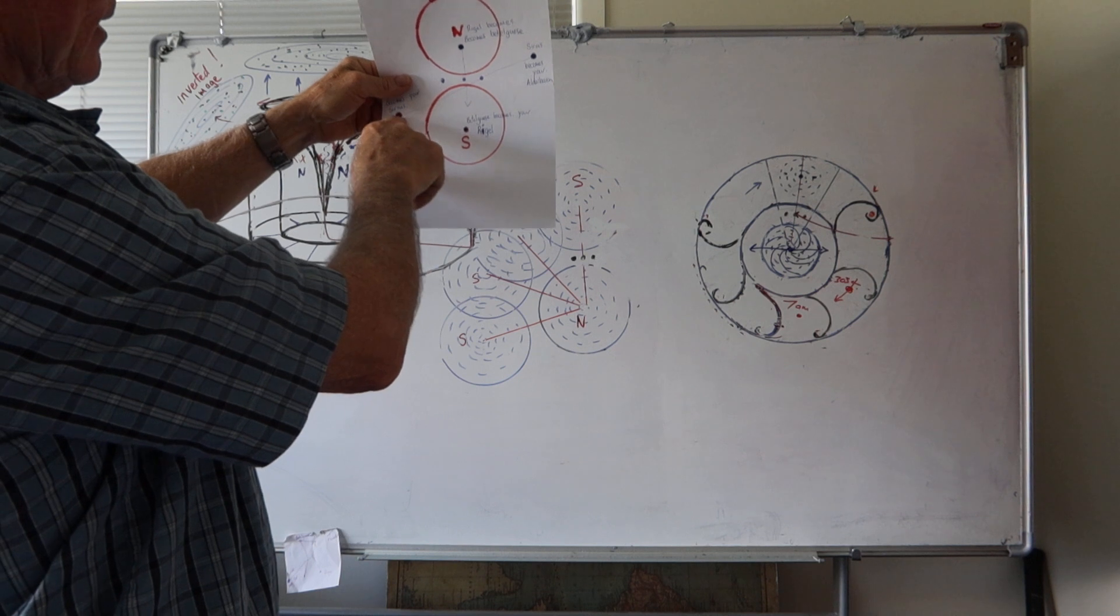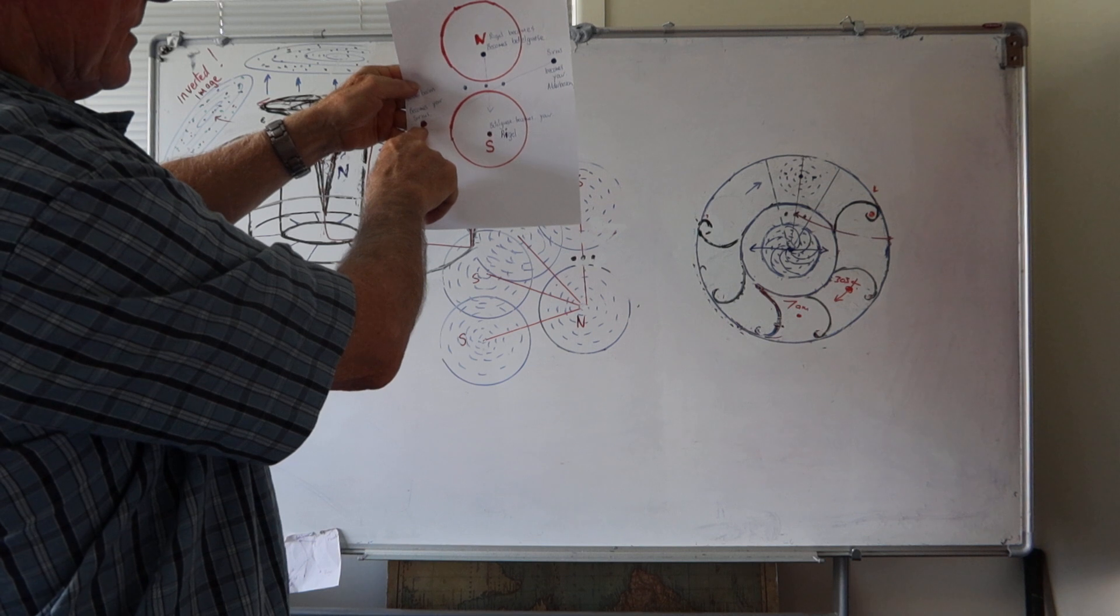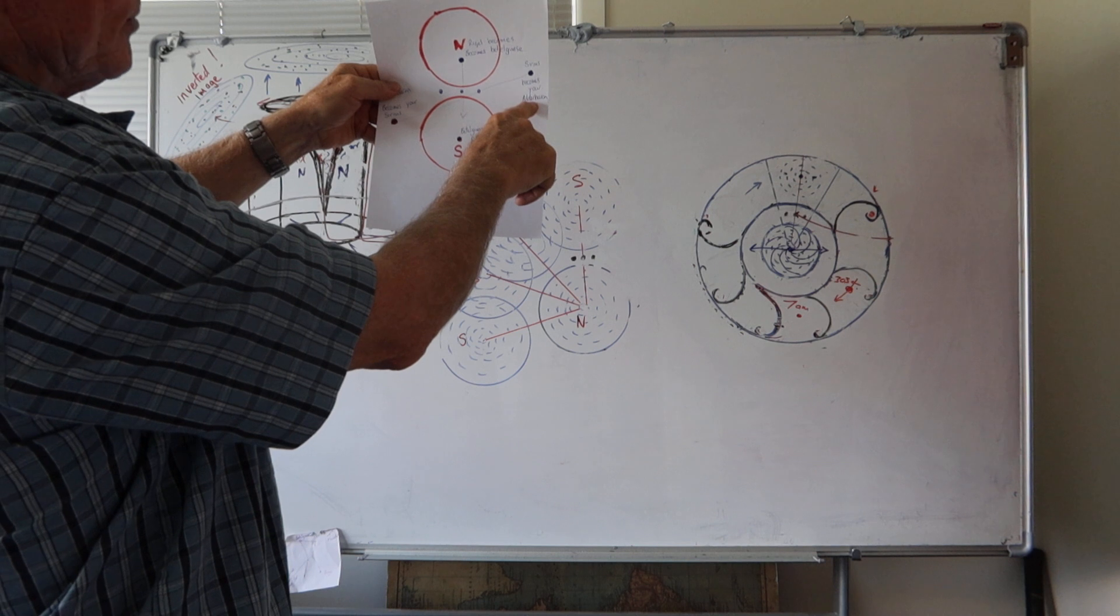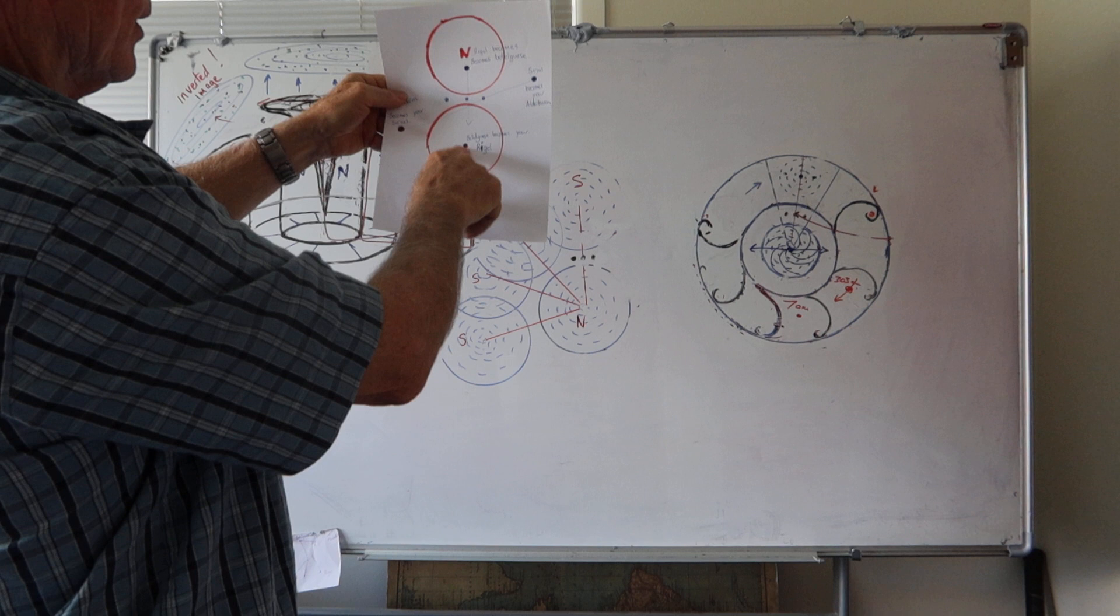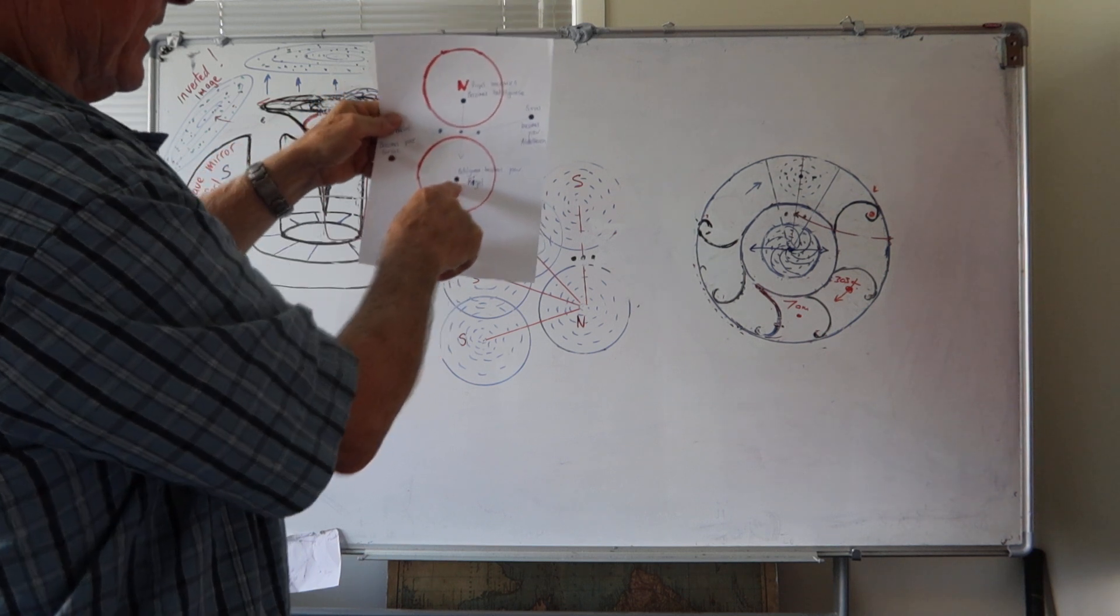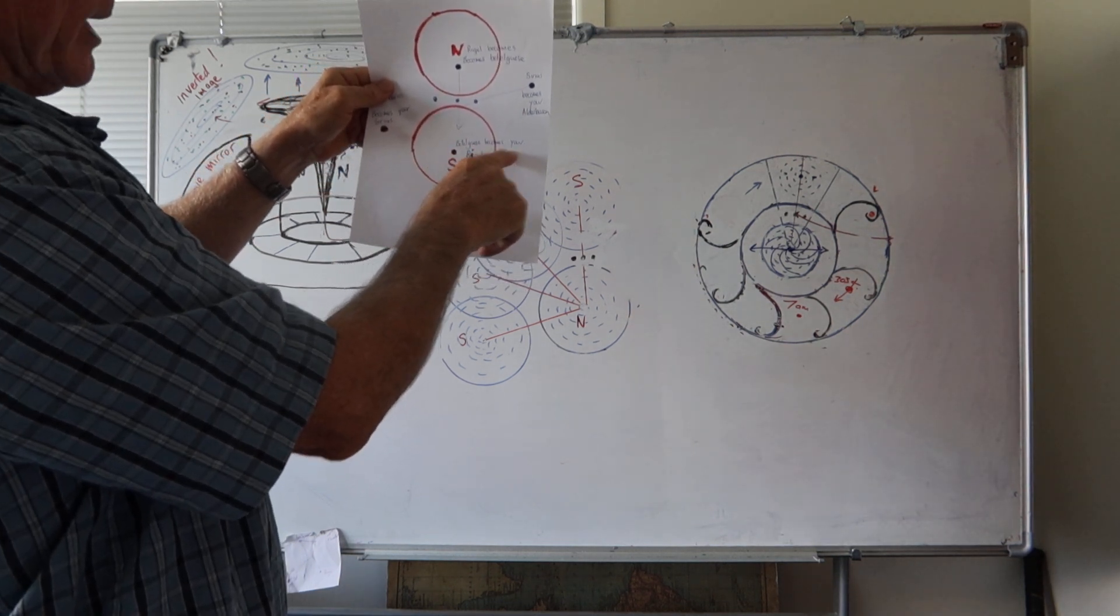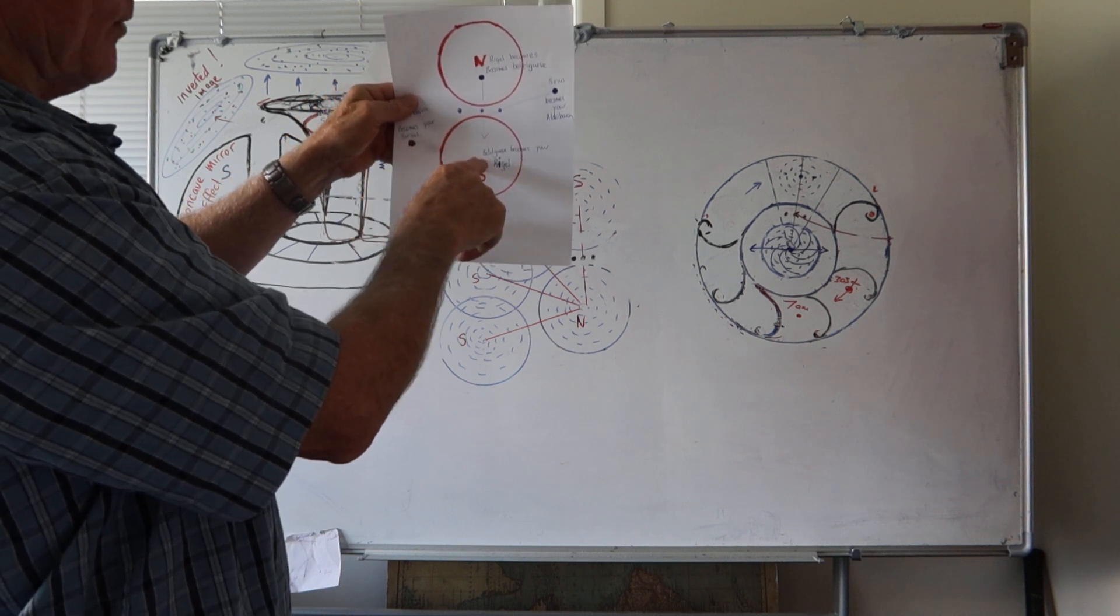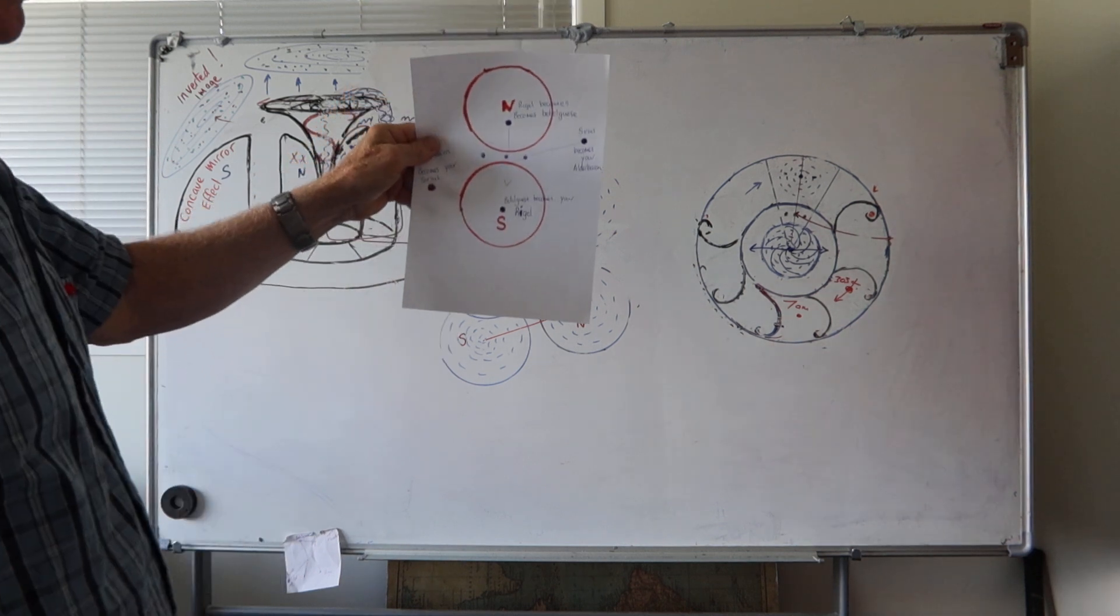But in the southern hemisphere, the southern hemisphere Aldebaran becomes your Sirius, and our northern hemisphere Sirius becomes your Aldebaran - sorry, your Rigel. Down here your northern hemisphere Betelgeuse becomes your Rigel. And to you they are both red shifted because they're not in your hemisphere. It's very logical.